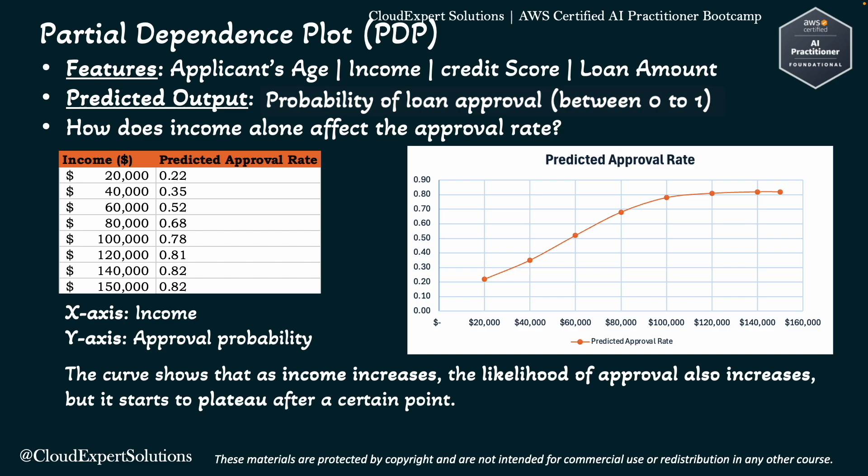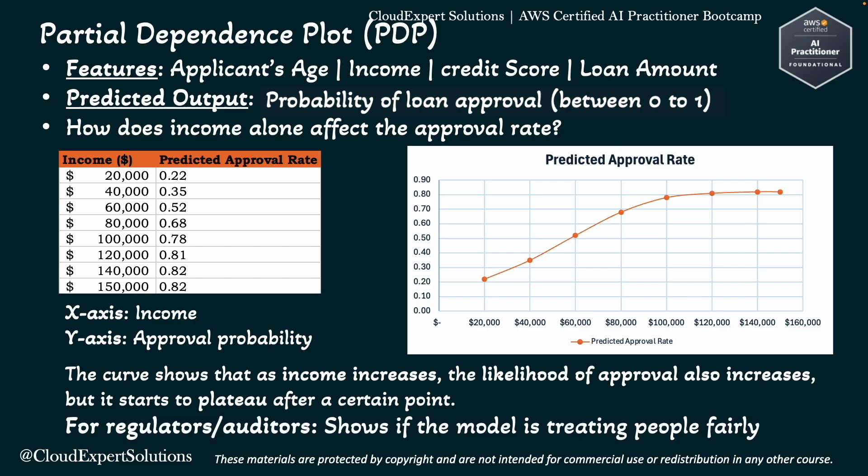Why is this useful? For regulators or auditors, it will show if the model is treating people fairly — for example, no sudden drop in approval rate for older applicants or for applicants with a different ethnicity but a stable income.